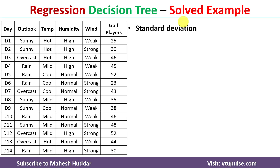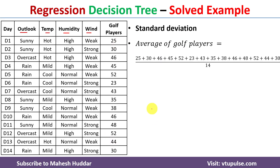To build a regression tree, first we need to calculate the standard deviation for the whole dataset. Next we need to calculate the reduction in standard deviation for each of the four given attributes. Then, based on the reduction in standard deviation, we select one attribute as the root node and start building the tree.